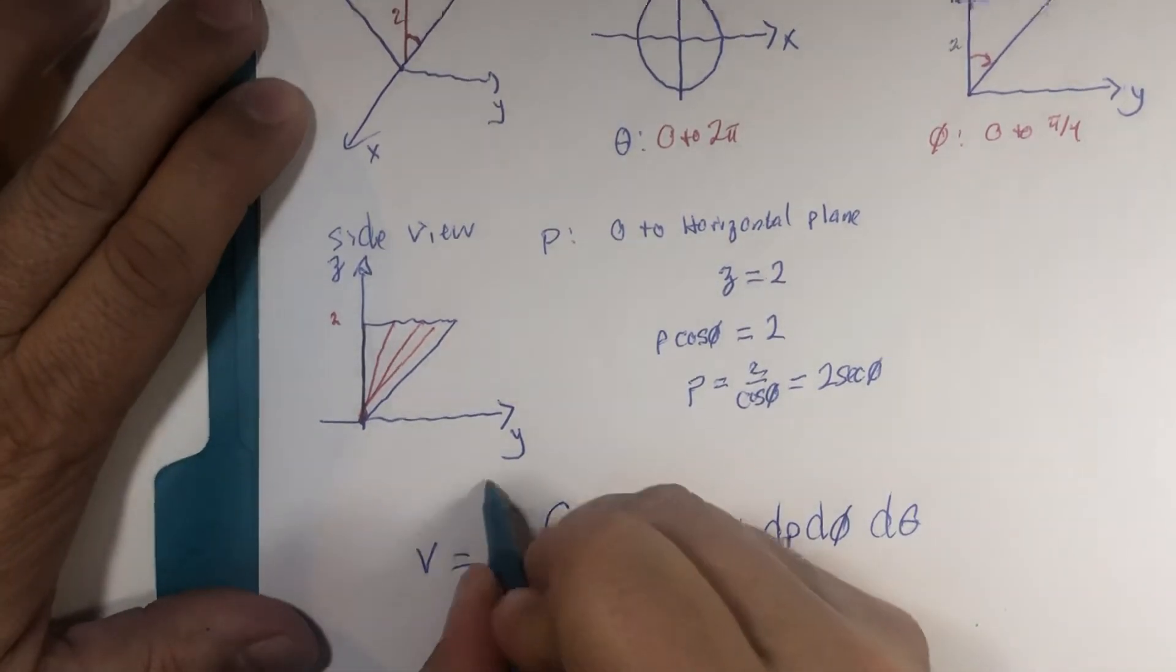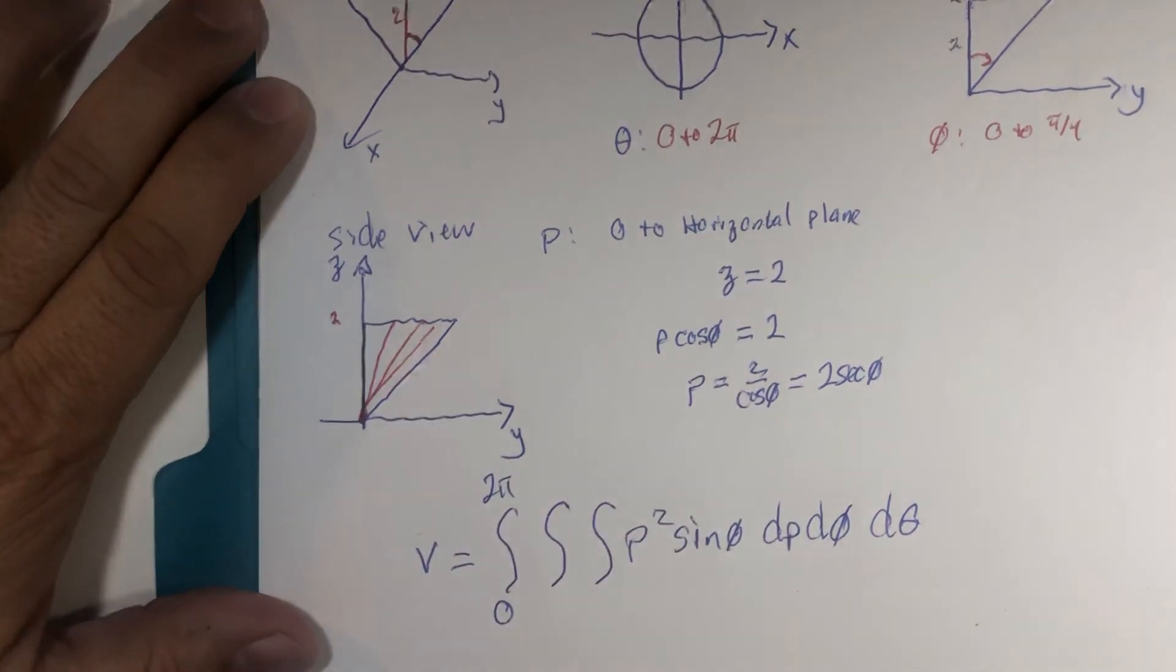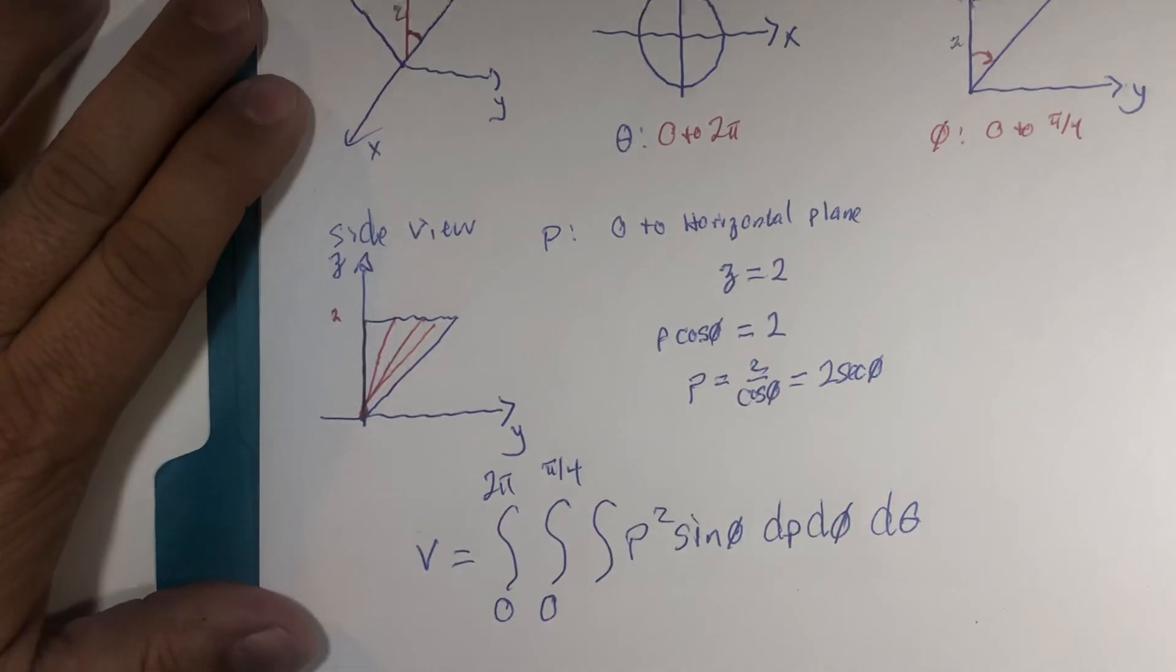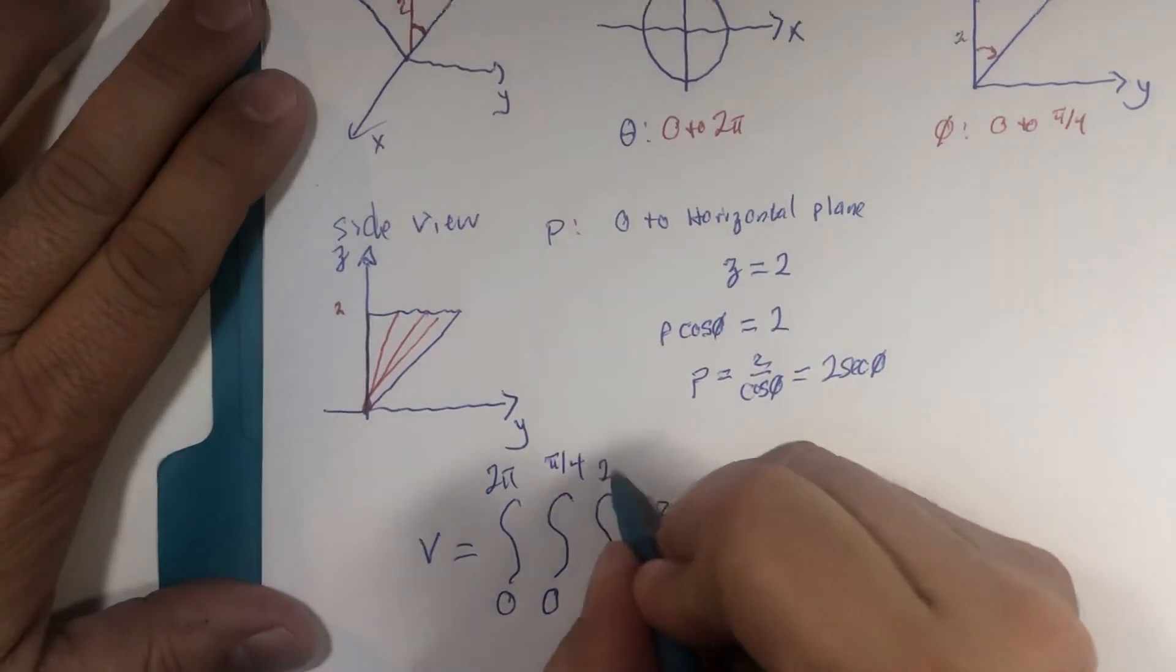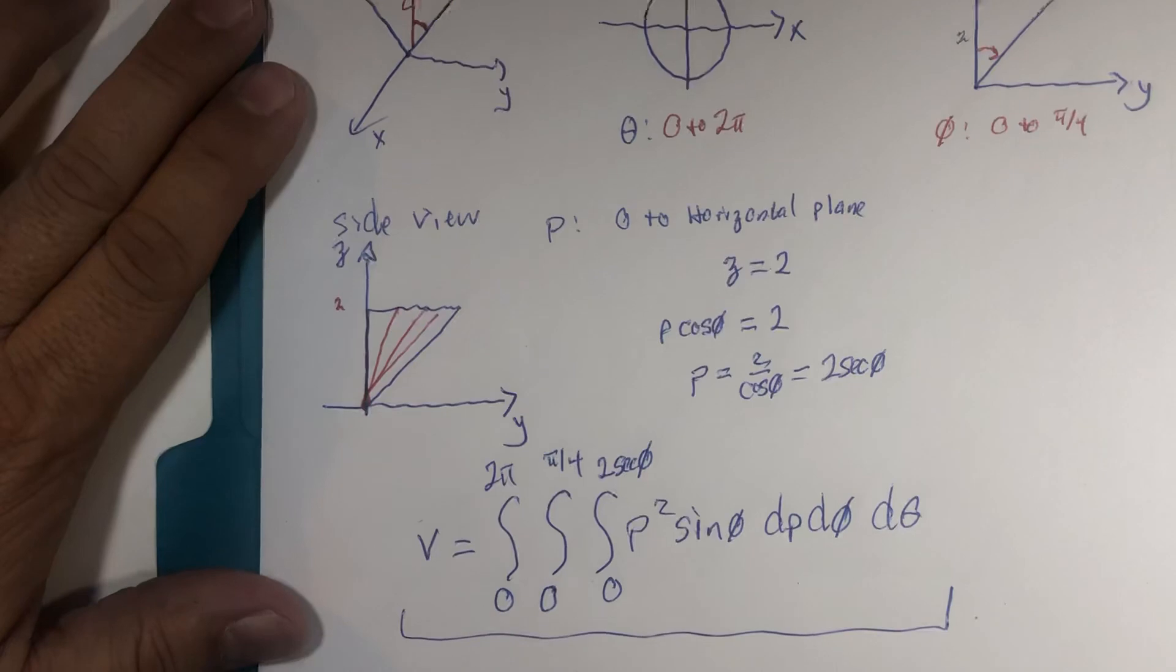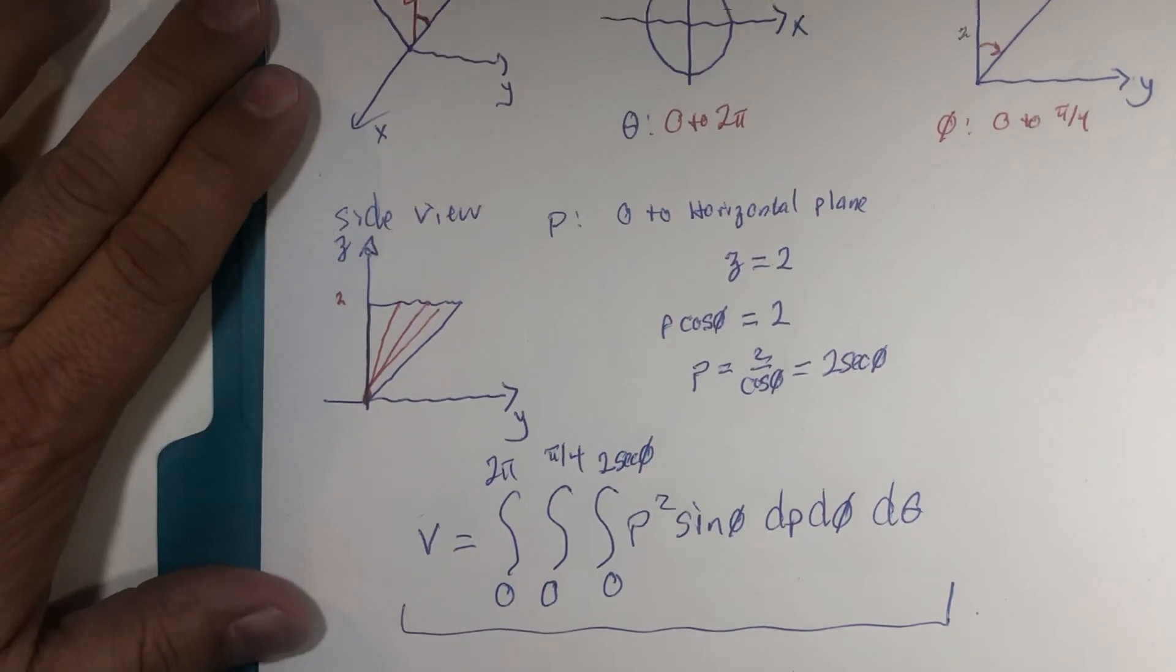and phi from 0 to π over 4, and ρ goes from 0 to 2 sec(φ). There you have it. Another couple of variations on the spherical integral. We're nearly done with the introduction phase for this.